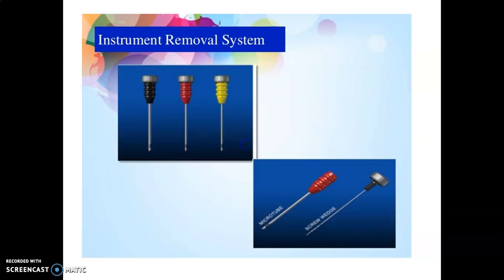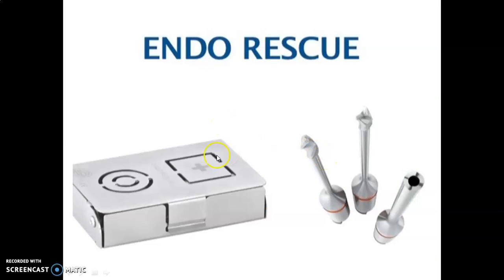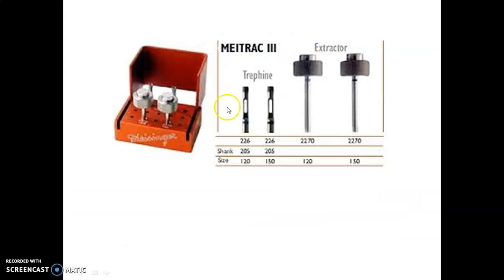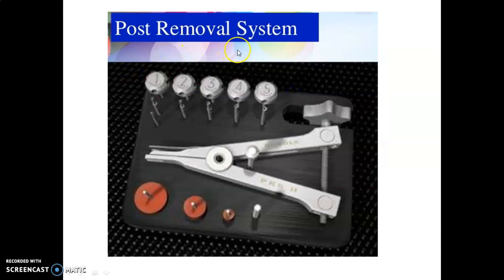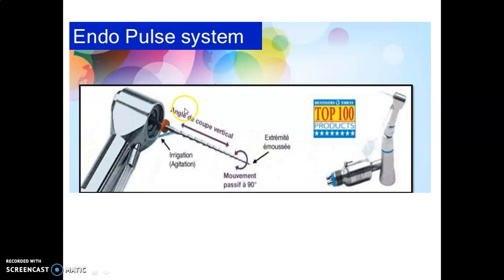The Instrument Removal System (IRS) consists of micro tubing and a screw wedge. Then there is the Endo Rescue, which is the most commonly used retrieval system nowadays. The Metric 3 system, like the Masserann kit, also consists of trephine burs and extractors. There is also a post removal system. The Endo Pulse system uses a file that moves in the vertical direction while irrigation is simultaneously delivered, causing agitation of the broken instrument so it can be retrieved easily.